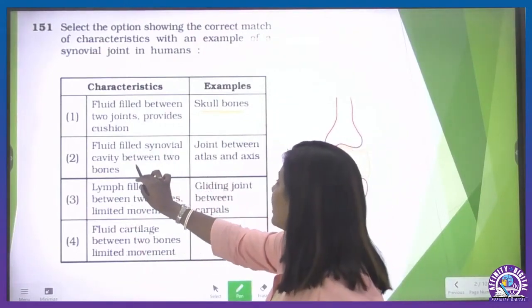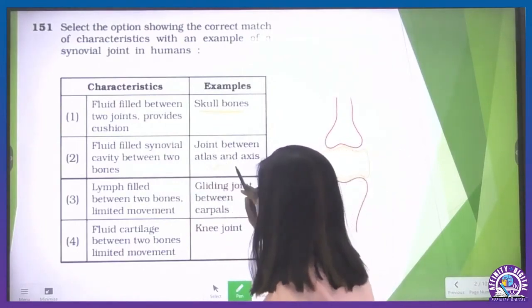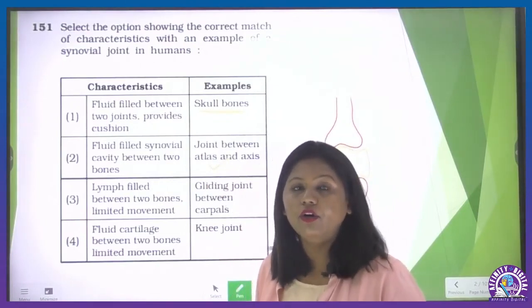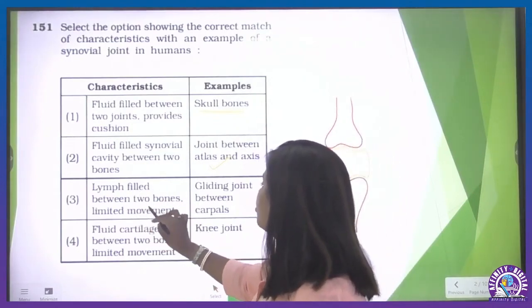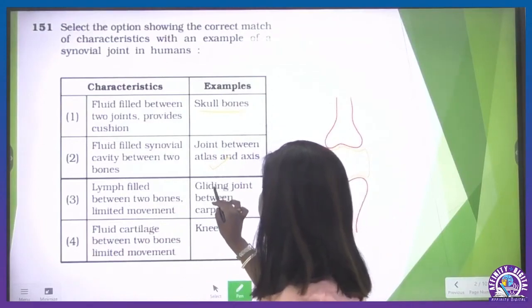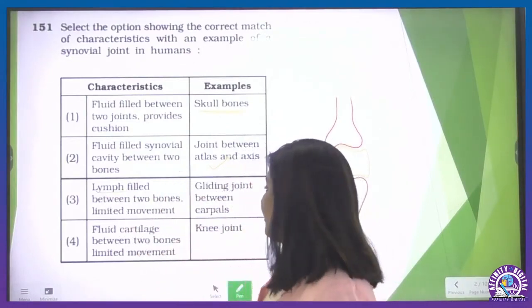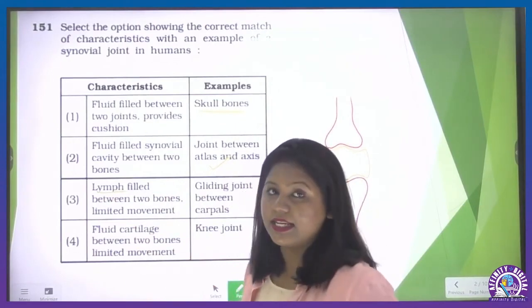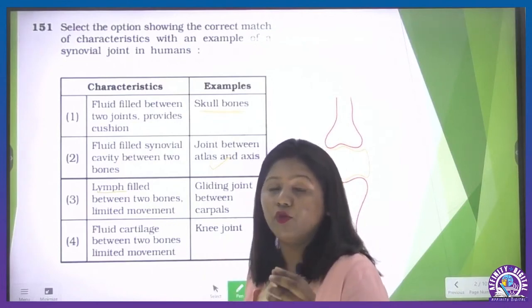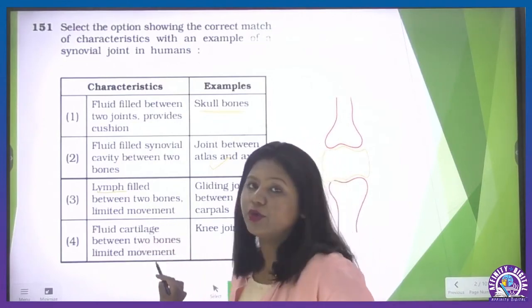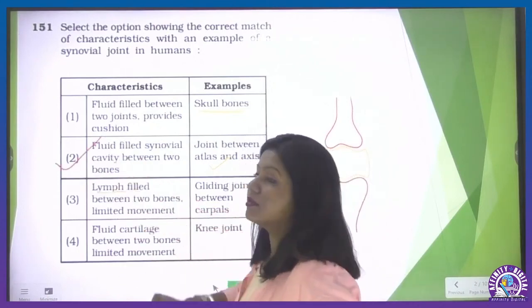The next option: synovial fluid, synovial cavity between two bones — correct. Joint between atlas and axis — yes, atlas and axis is an example of pivot joint, which is part of the synovial joint. Then, lymph filled between two bones with limited movement — that is gliding joint. Gliding joint is a synovial joint, but it contains synovial fluid, not lymph. Fluid cartilage is not applicable for knee joint either. So the correct answer is the second option.